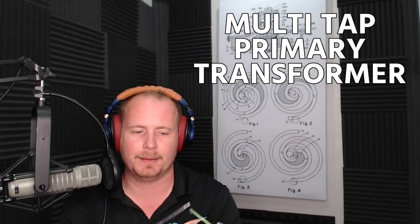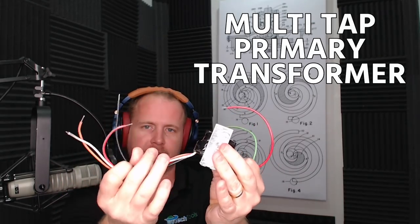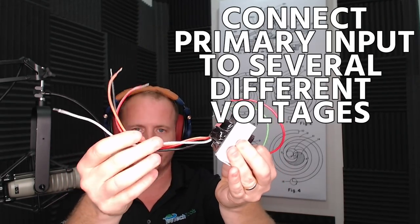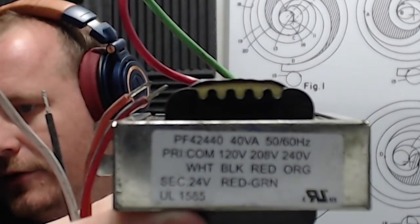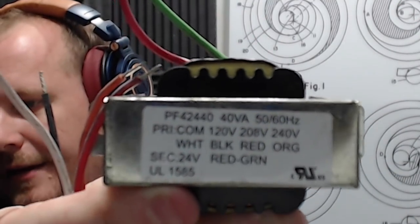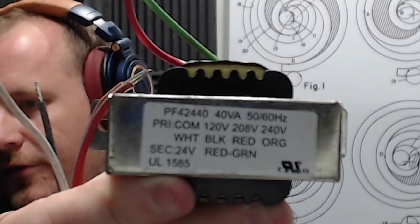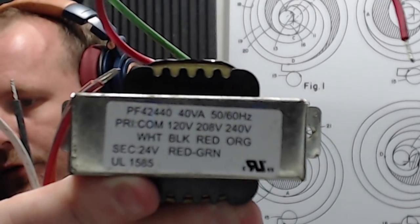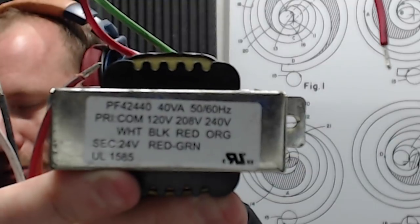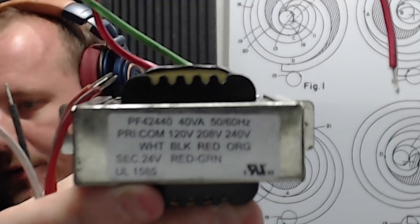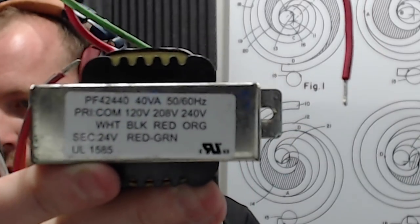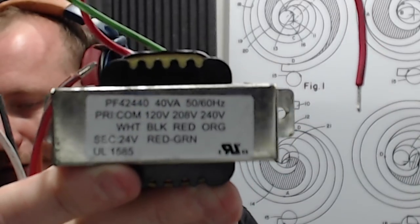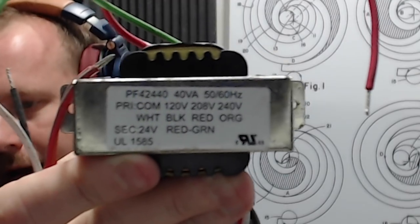This one is a multi-tap primary transformer, which means that you can connect this primary, the input on the transformer, to several different voltages. And if you look here on top, you can see 40VA, 50 or 60 Hertz with primary 120 volts, 208 or 240. It says primary common is white, which means you always use white on the primary. Use black for 120 volts, red for 208 and orange for 240 volts. And then the secondary is 24 volts, red and green.